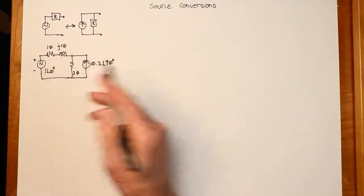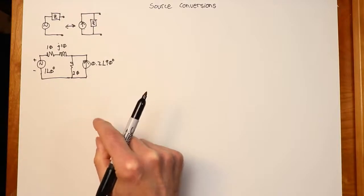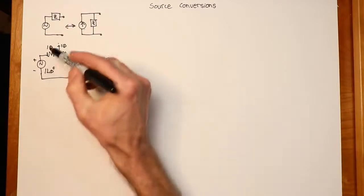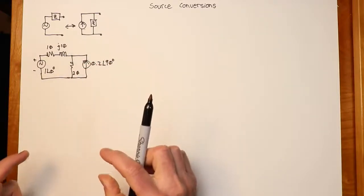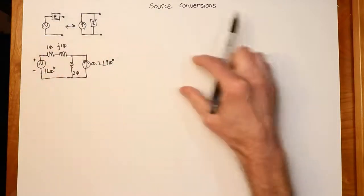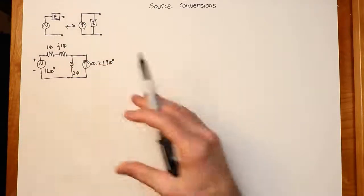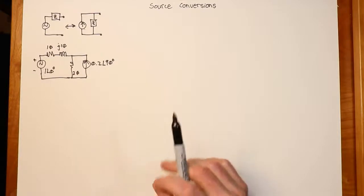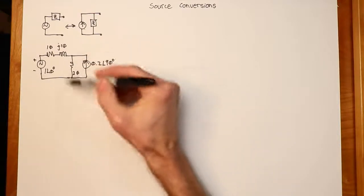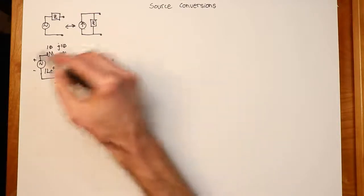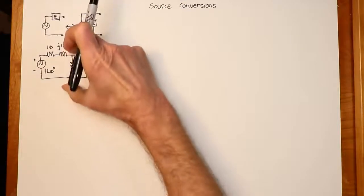To solve this, because we have two sources, one possibility is to do some source conversions. We could convert this voltage source with the 10 plus j10 into a current source, and then what we'll wind up with is a circuit that's all parallel — two current sources and two impedances in parallel, which we can simplify as a parallel network to find the voltage. Another possibility would be to change this current source into a voltage source, giving us a simple series loop, and from that we could find the voltage.